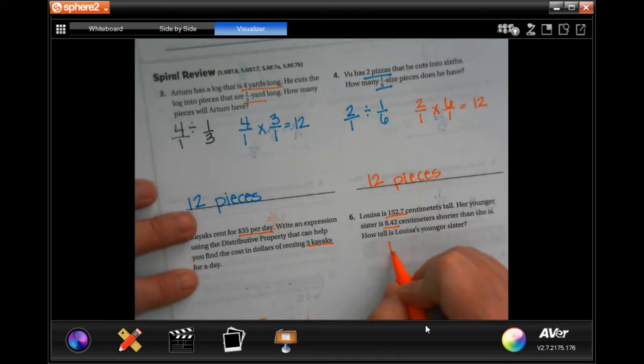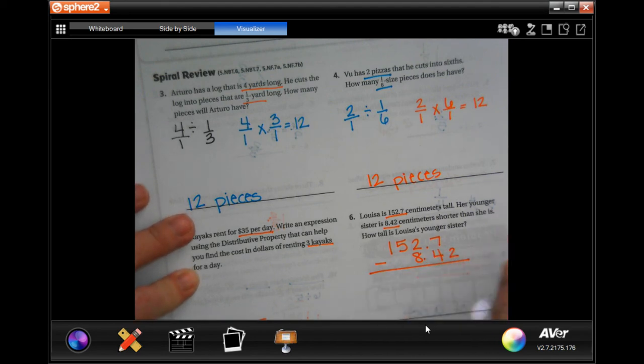Notice that I lined up those decimals. I don't have a number here to take two away from, so I'm going to put a zero because it's after the decimal point. Don't freak out when they don't line up.